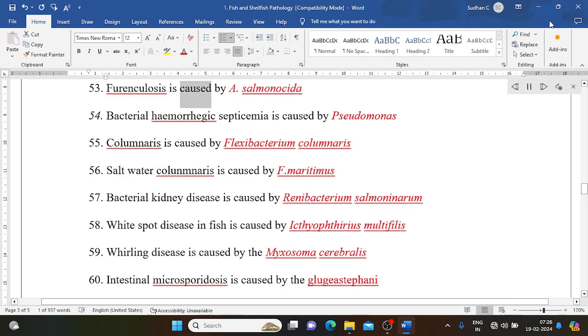Furunculosis is caused by Aeromonas salmonicida. Bacterial hemorrhagic septicemia is caused by Pseudomonas. Columnaris is caused by Flexibacterium columnaris. Saltwater columnaris is caused by F. maritimus. Bacterial kidney disease is caused by Renibacterium salmoninarum. White spot disease in fish is caused by Ichthyophthirius multifiliis.